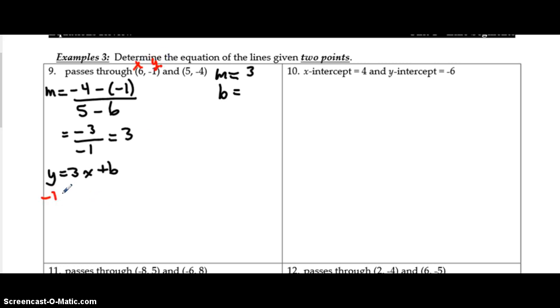So y is negative 1, x is 6, and then we're going to solve this equation for b. So negative 1 equals 18, plus b, subtract 18 on both sides, and we get b is negative 19. And now we're ready to write the equation. Final answer, y is equal to 3x minus 19.